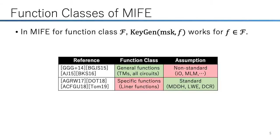Studies of MIFE can be classified into two categories with respect to the function class. The first category includes MIFE for general functions such as Turing machines or all circuits, while all MIFE schemes in this category require non-standard assumptions such as indistinguishability obfuscation or multilinear maps. The other category includes MIFE for specific functions; the only known schemes in this category handle linear functions or inner products, and can be constructed from standard assumptions such as matrix DDH, LWE, or DCR.